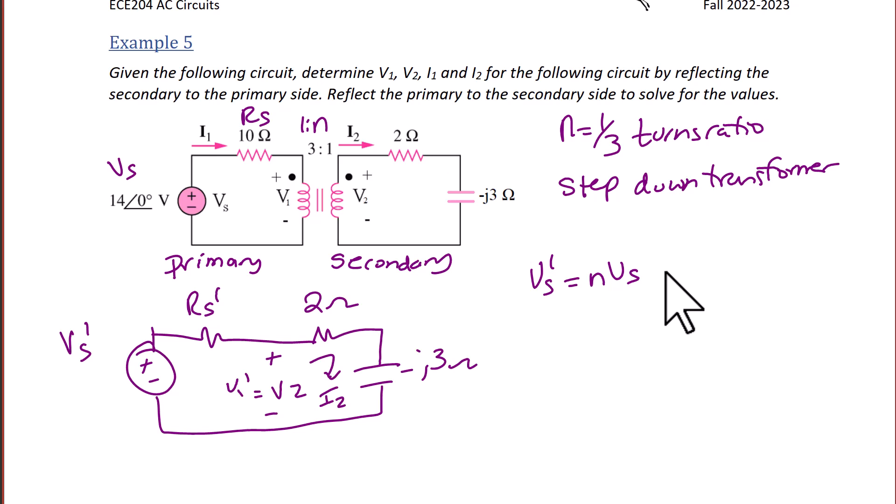VS prime is equal to N times VS. That's going to be 1 third times 14, so VS prime is 14 over 3 with an angle of 0 degrees. RS prime is going to be RS times N squared, so that's going to be 10 times 1 over 3 squared, or 10 over 9 ohms.